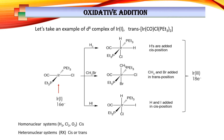Square planar d8 systems are very well suited for oxidative addition. For example, we take an iridium complex with square planar geometry and 16 electrons at its periphery. When this complex undergoes oxidative addition with homonuclear or heteronuclear systems, the oxidation state increases and the coordination number increases from four to six. The two atoms from the substrate can be added in a cis or trans fashion, depending upon the mechanism involved.